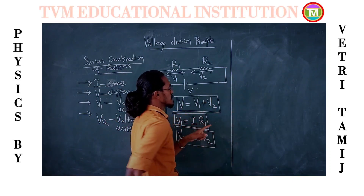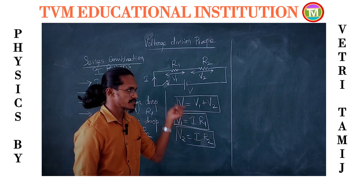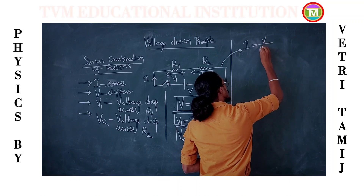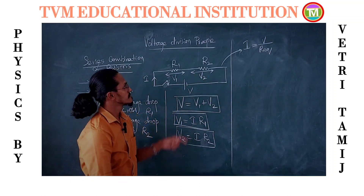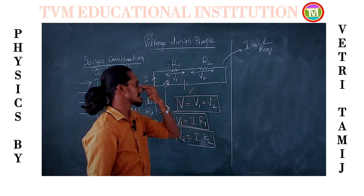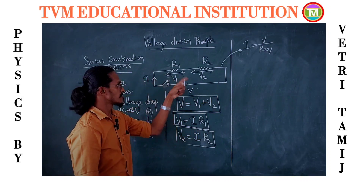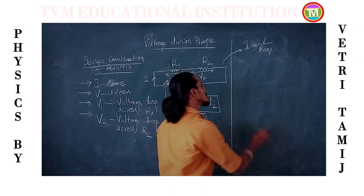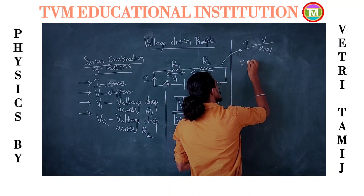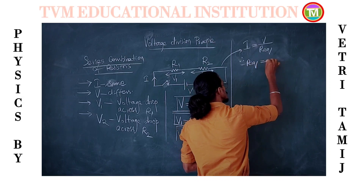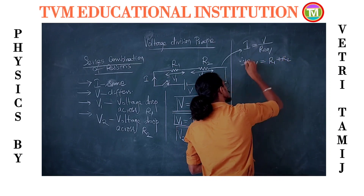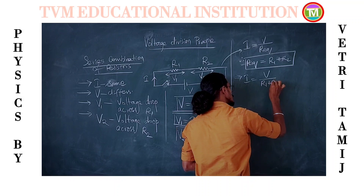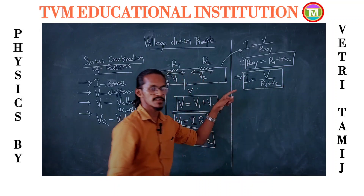First, calculate the current flowing across the circuit. Current flows across the series circuit: I is equal to V divided by R equivalent. The R equivalent in series is R1 plus R2, which implies I is equal to V divided by R1 plus R2.